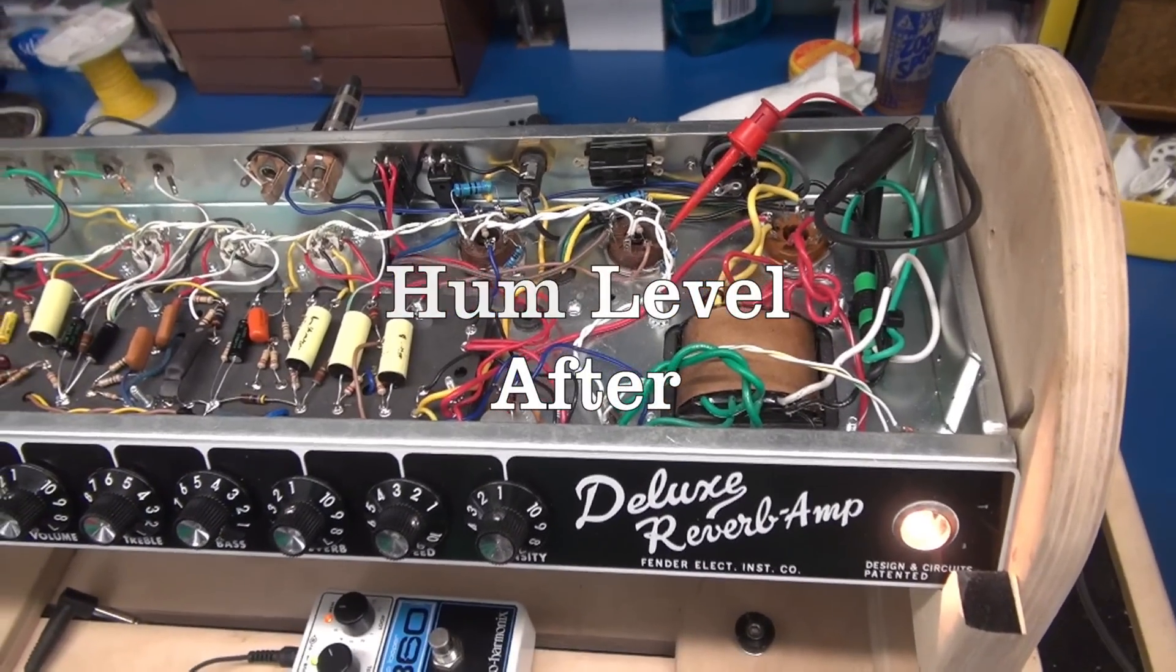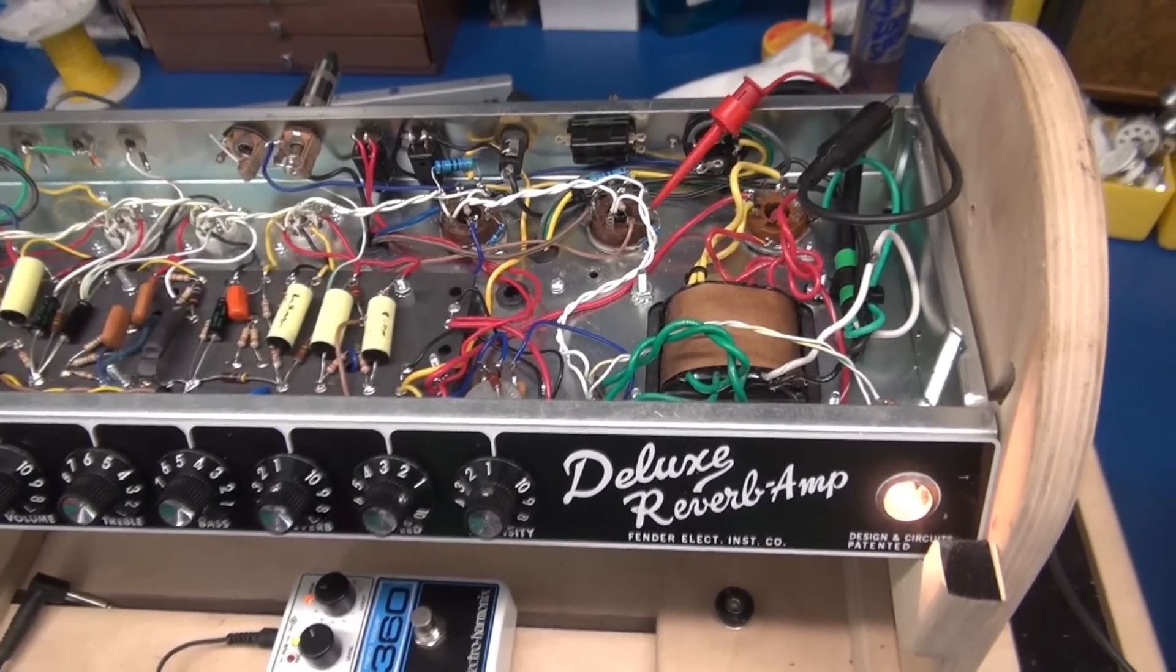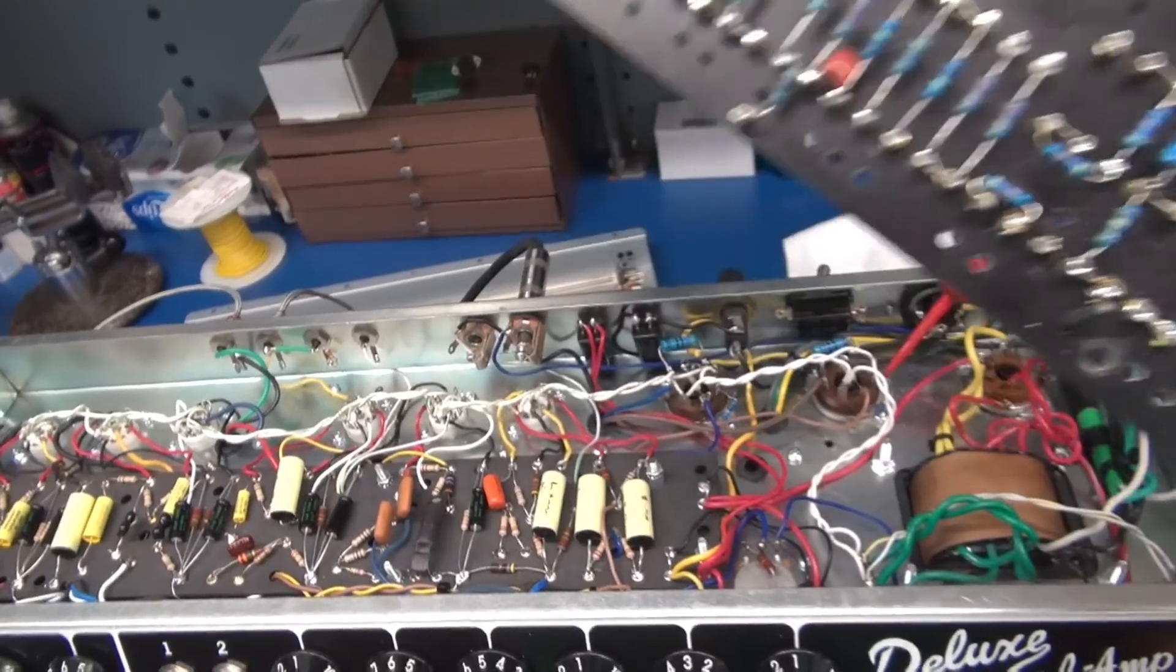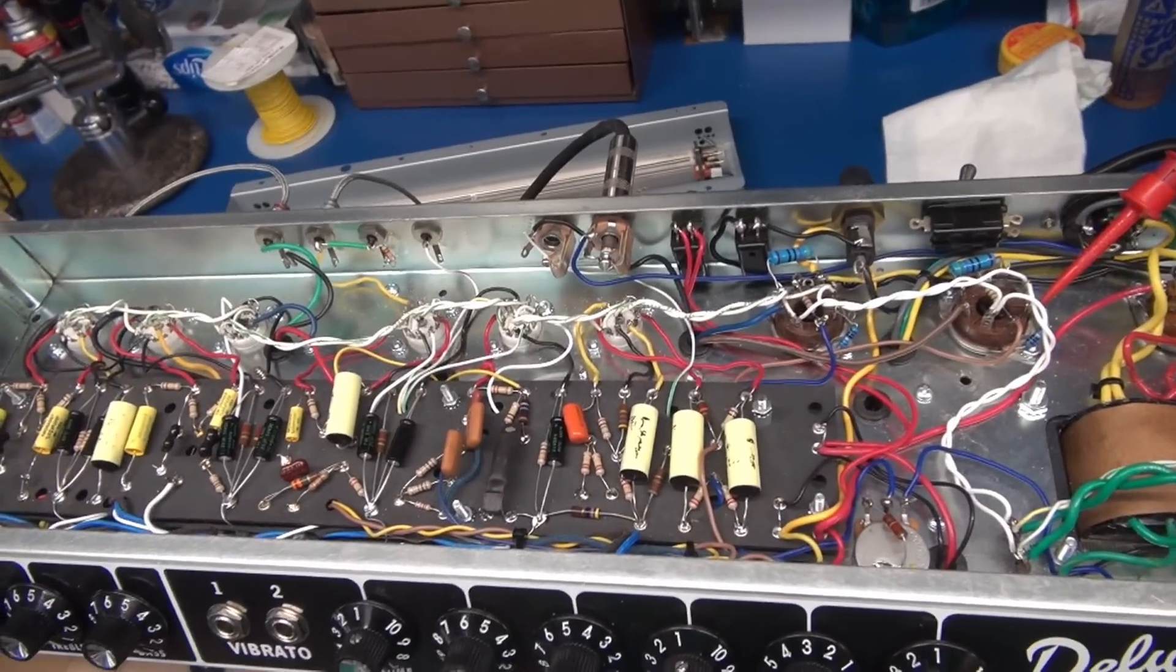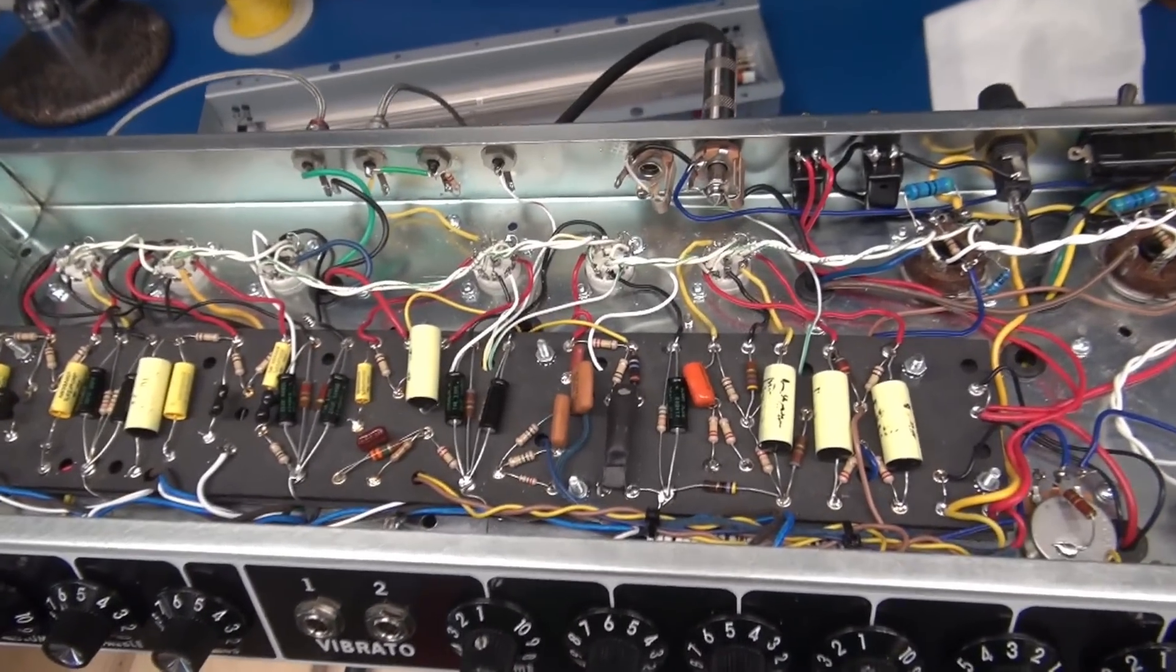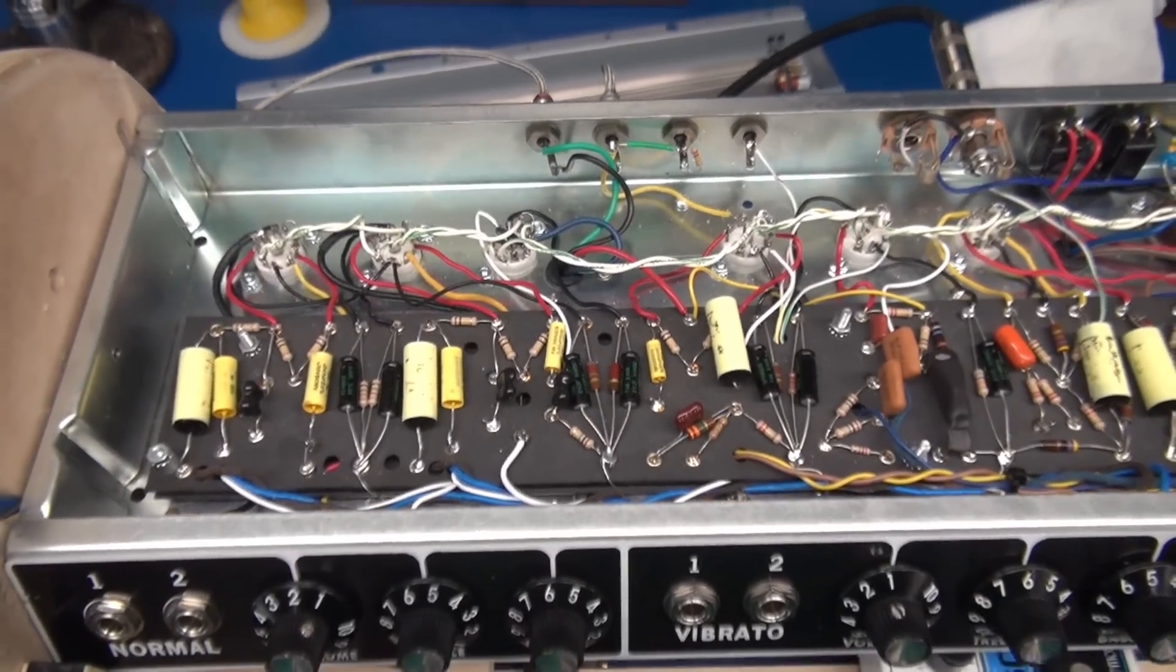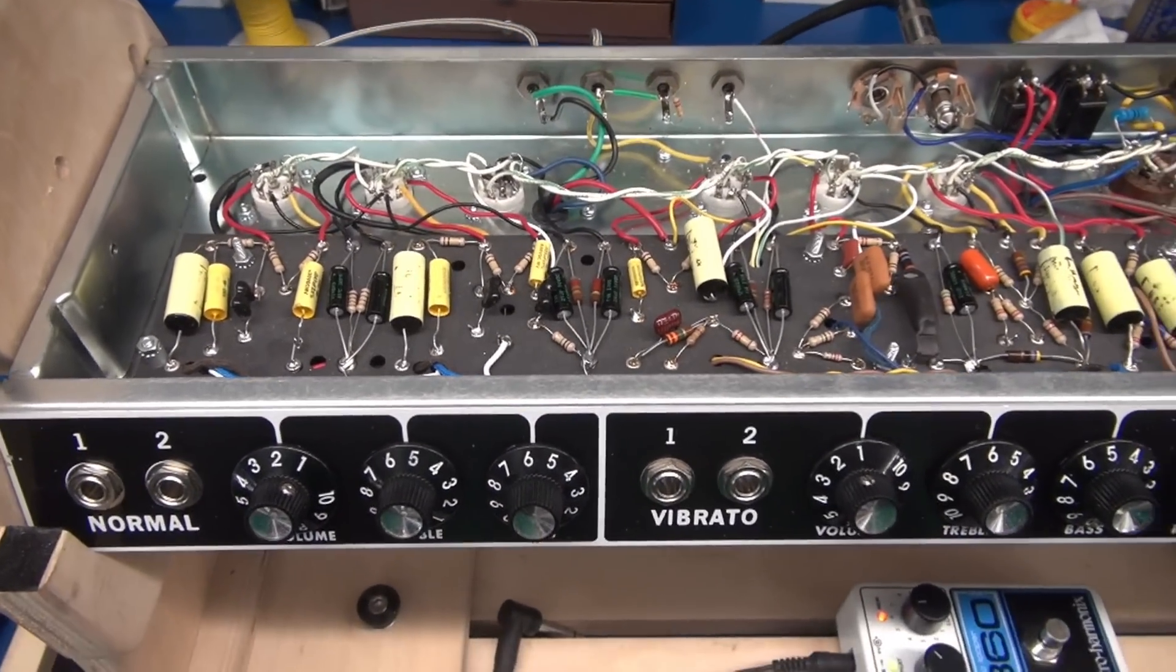Here is the initial test of the deluxe reverb amp after removal of the Hoffman board and installation of a standard fender deluxe eyelet board. I've got everything wired up. The amplifier is on. Let's listen to the noise floor.